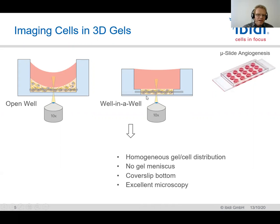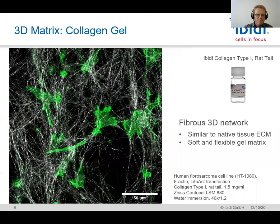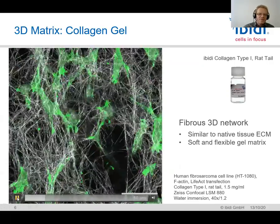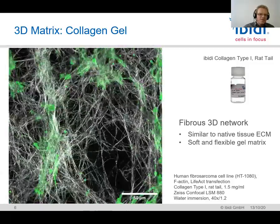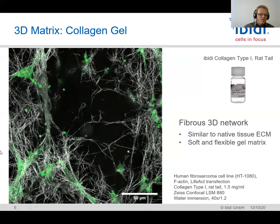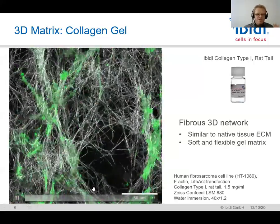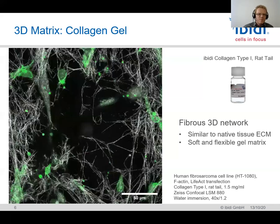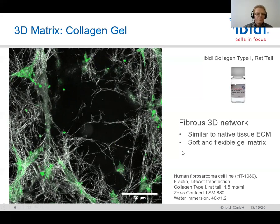With the cover glass at the bottom, we can access microscopy very nicely — fluorescence microscopy — so the imaging readout is really easy. This example of HG1080 human fibrosarcoma cells in green and the collagen gel fibers in white is a very nice example of this fibrous three-dimensional network. You can nicely see how the cells are active, dividing, and migrating in this soft and flexible gel matrix. The collagen gel is a very nice and easy tool, very similar to the native tissue extracellular matrix, and it's a very easy first step for a three-dimensional assay.